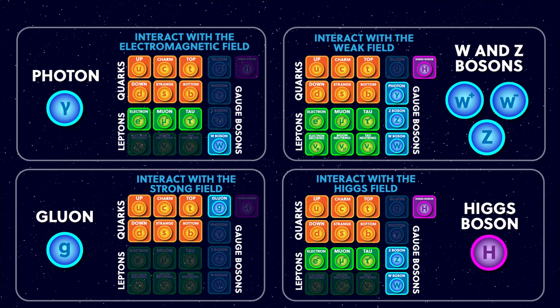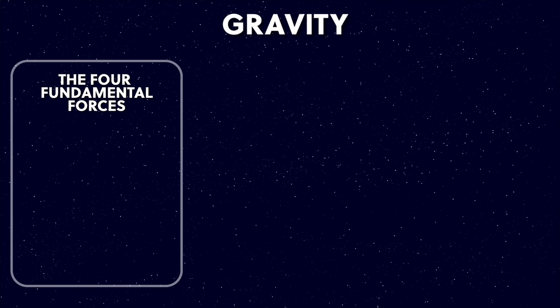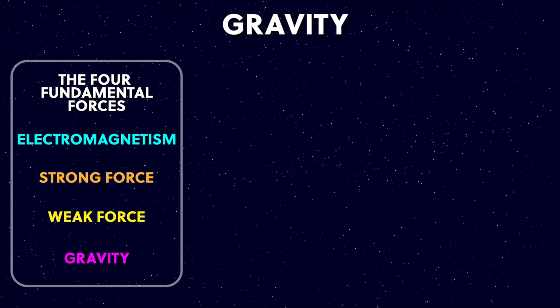So that's my summary of the standard model of particle physics. But before I go, I want to talk about gravity. When we learn physics, we learn that the four fundamental forces are electromagnetism, the strong force, the weak force, and gravity. But I haven't mentioned gravity until now — that's because we don't have a quantum description of gravity.